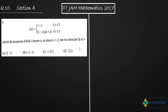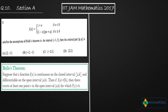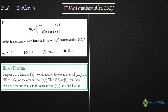First, let us remember what Rolle's theorem actually states. I will show you that note first. The statement for Rolle's theorem is: suppose that a function f(x) is continuous on the closed interval [a, b] and differentiable on the open interval (a, b). Then if f(a) equals f(b), there exists at least one point c in the open interval (a, b) for which f'(c) equals 0.